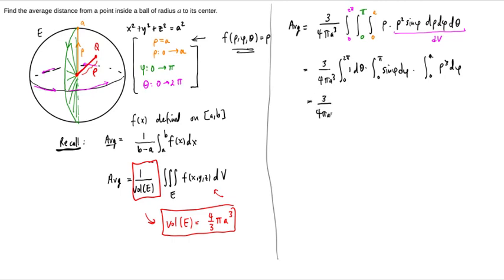So I'll finish it off here. We have 3 over 4 pi, a cubed, times, and this integral is 2 pi. This integrand is negative cosine. When you evaluate it you end up with 2. So you should check that. And then this integral is now 1 fourth a to the fourth power. Okay?